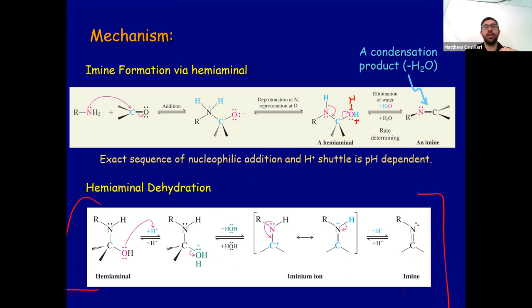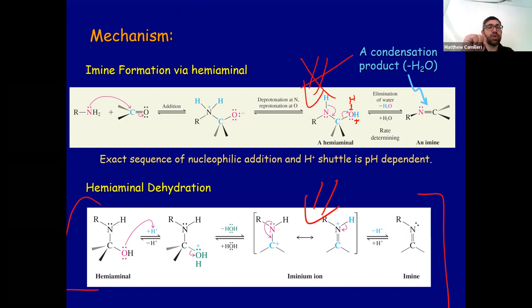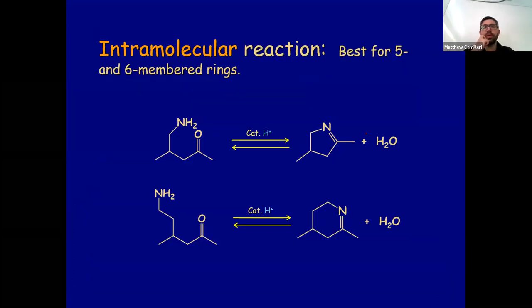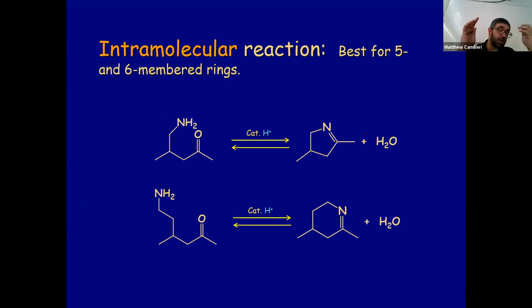If I ask you for a mechanism I would want the detailed stepwise one, not the condensed version, because the condensed version doesn't show all the steps. Of course you can do this intramolecularly and imine formation normally happens very readily. From lab experience this reaction is slightly solvent dependent — ethanol seems to be the best solvent. It will happen in other solvents including water but will be slower.